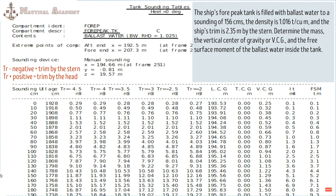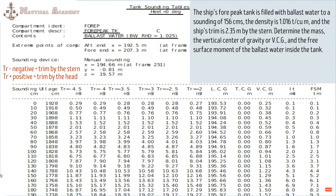Let us have some exercise. The ship's four-peak tank is filled with ballast water to a sounding of 156 centimeters, the density is 1.016 tons per cubic meter, and the ship's trim is 2.35 meters by the stern. Determine the mass, the vertical center of gravity or VCG, and the free surface moment of the ballast water inside the tank.